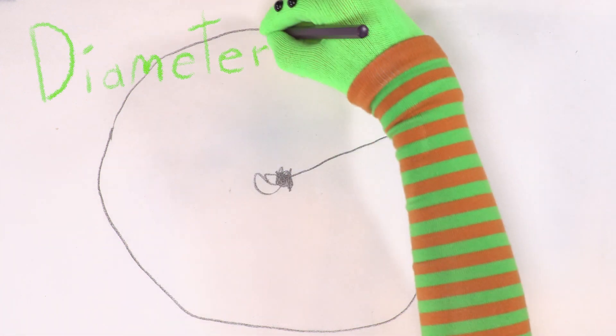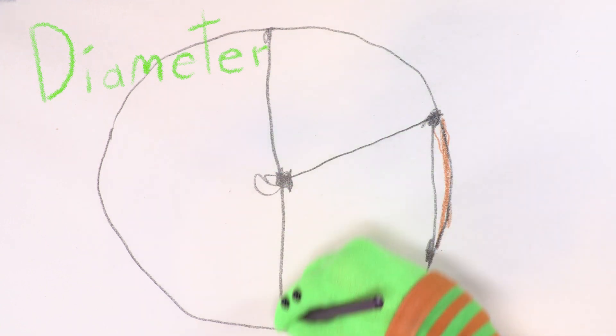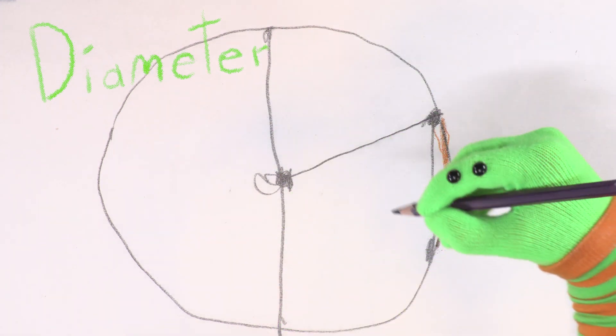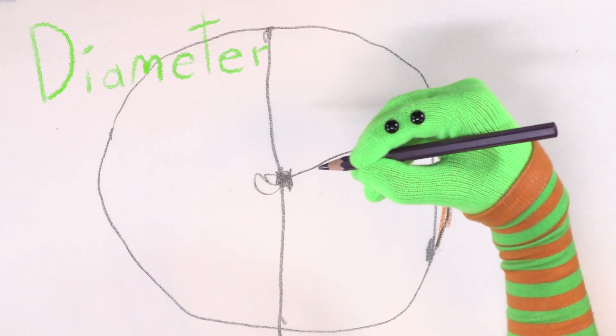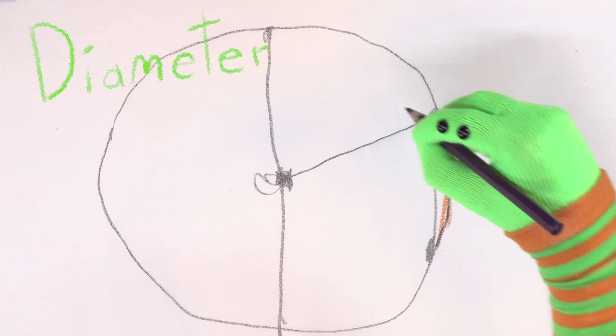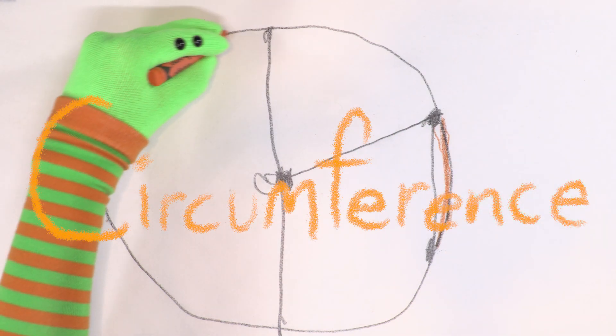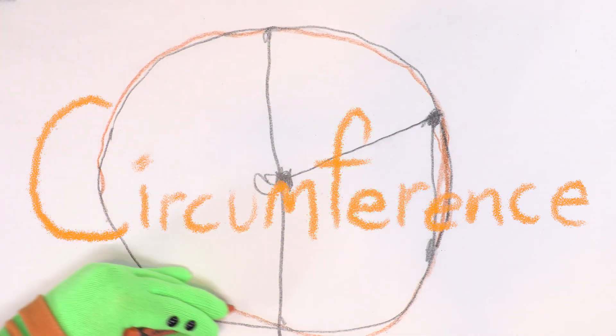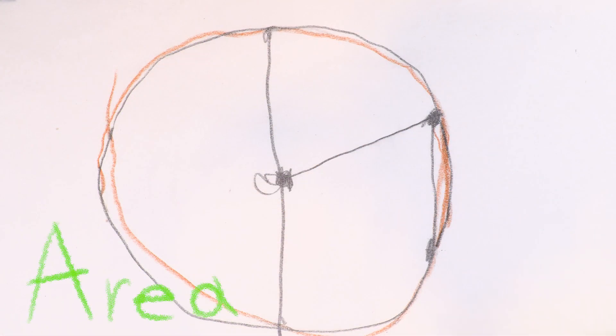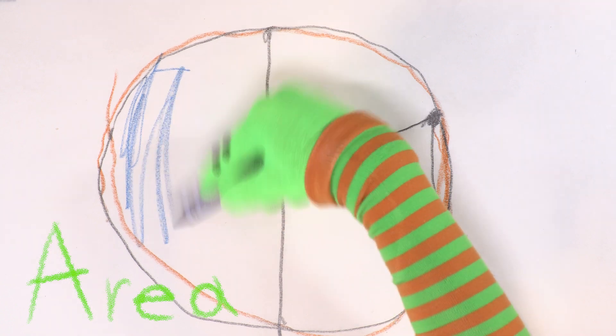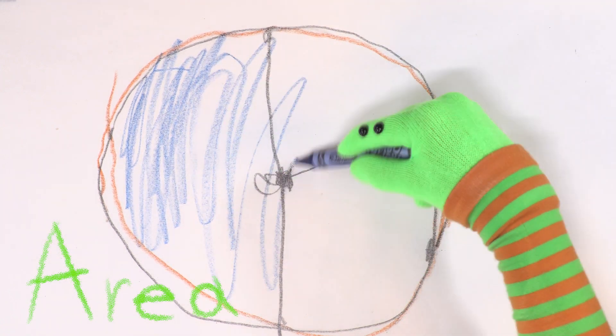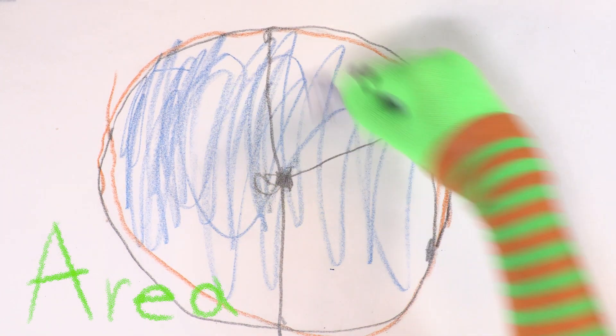Diameter, the distance across the circle when you go through the center. The length of a diameter is two times the length of the radius. The diameter cuts the circle in half. Circumference, the distance all around the edge of the circle. Area, how much space the circle takes up. It tells you how much coloring you have to do to fill the whole circle.